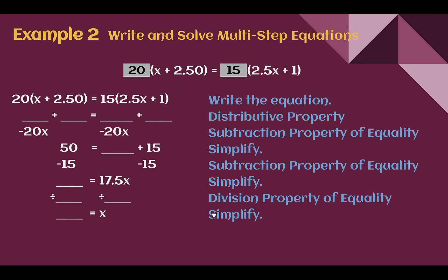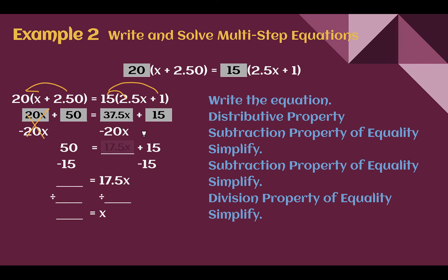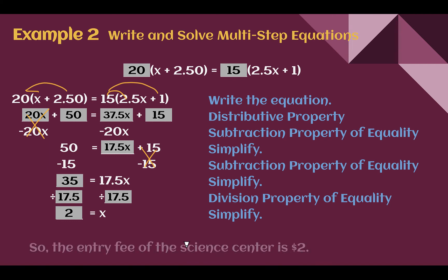Now let's solve. Distributing: 20 times X is 20X, and 20 times $2.50 is $50. On the right: 15 times 2.5 is 37.5, and 15 times 1 is 15. So 20X plus 50 equals 37.5X plus 15. Subtracting 20X from both sides gives 50 equals 17.5X plus 15. Subtracting 15 from both sides gives 35 equals 17.5X. Dividing both sides by 17.5, X equals 2. So the Science Center entry fee is $2 per student.